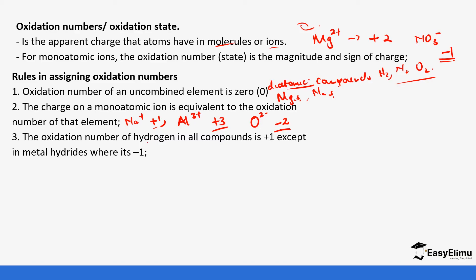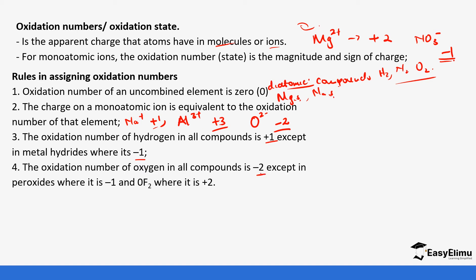The oxidation number of hydrogen is always +1, except in metal hydrides where it is −1. The oxidation number of oxygen is always −2, except in peroxides (such as hydrogen peroxide or sodium peroxide) where it is −1, and in oxygen fluoride where it is +2. In all other cases, oxygen is −2.